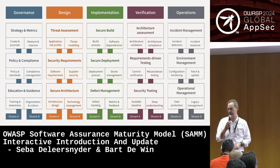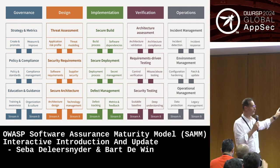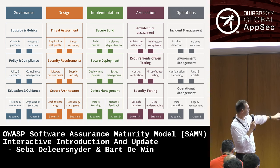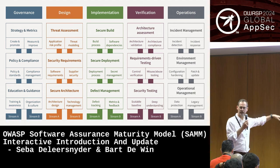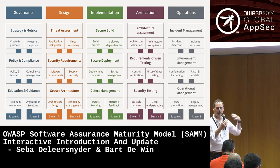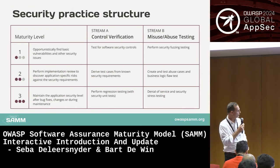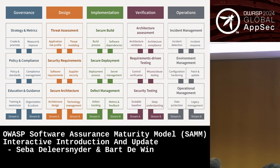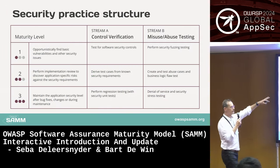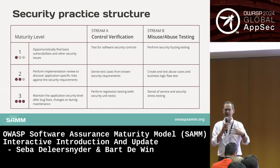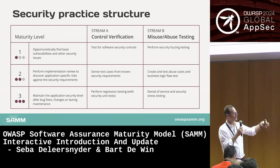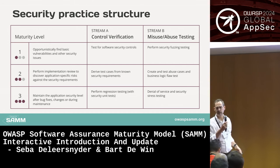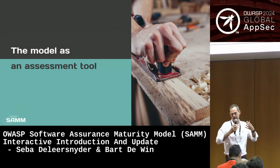This is SAMM — everything there is, nothing more, nothing less. It can be a bit of a steep learning curve for first-time users. We have Governance, Design, Implementation, Verification, and Operations as the five business functions, each with security practices. One example is Requirements-Driven Testing with two streams: Control Verification — are you building security as you should — and Misuse/Abuse Testing — can you break the application? Each stream has three maturity levels with described activities.